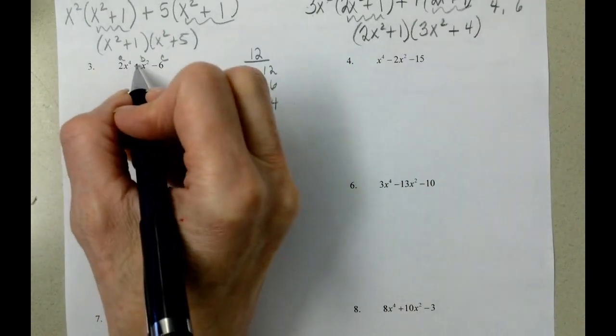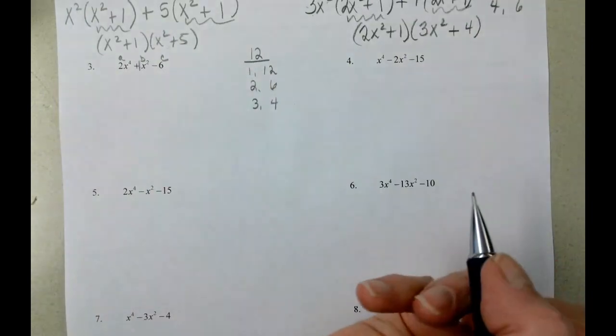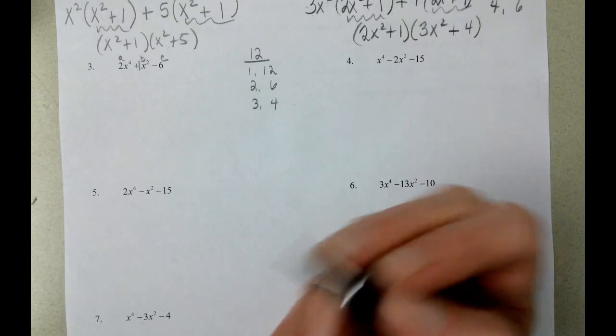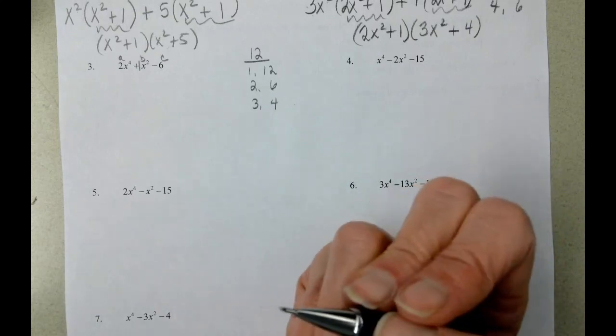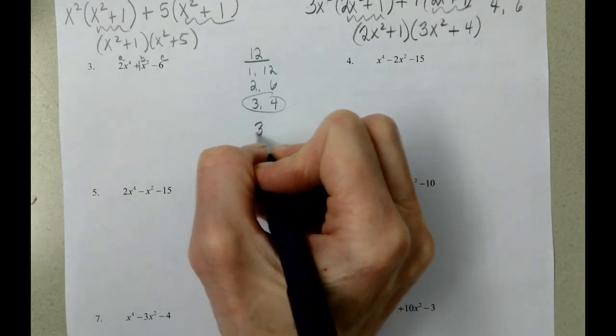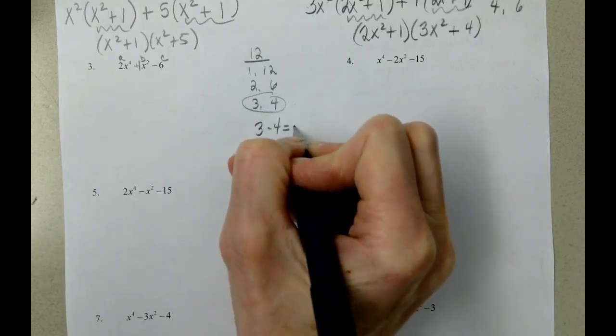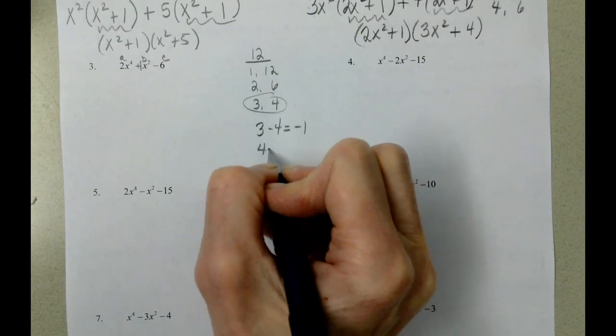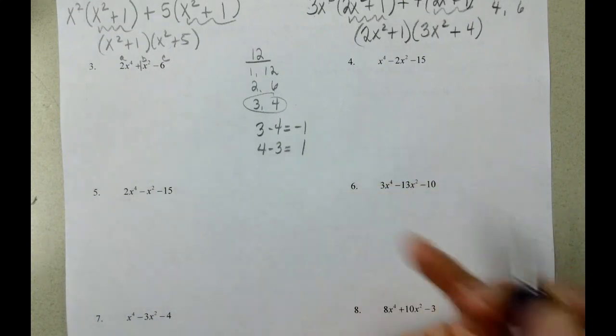Remember that the number in front of the x squared is a 1. And will any of those combine to be 1, which is going to be here. And we can do 3 minus 4, which equals negative 1, or 4 minus 3, which equals positive 1.